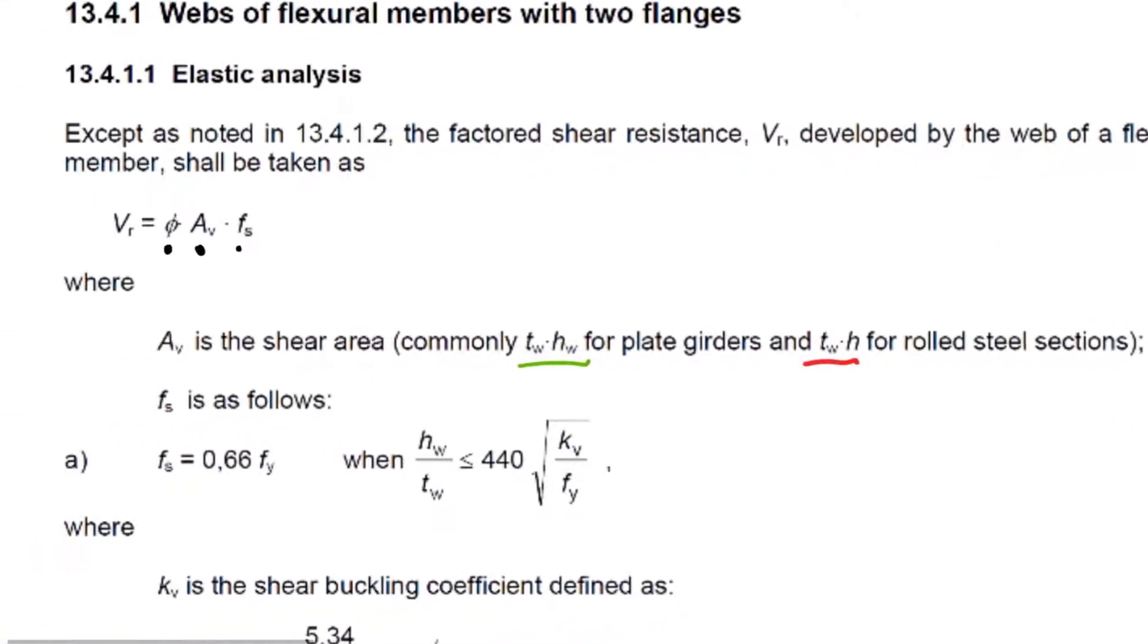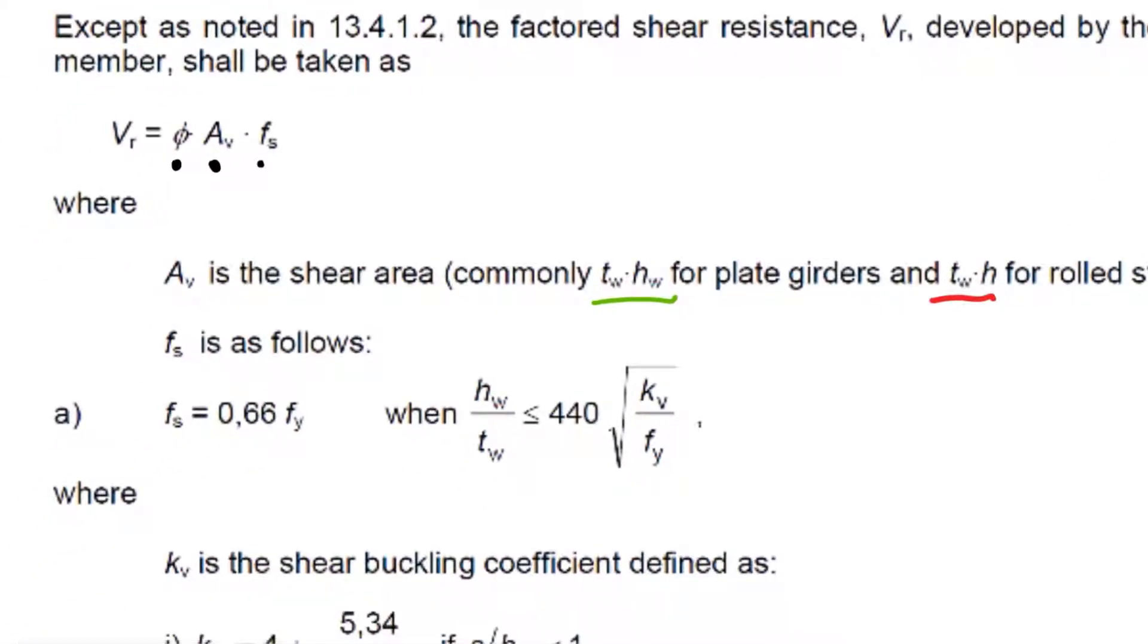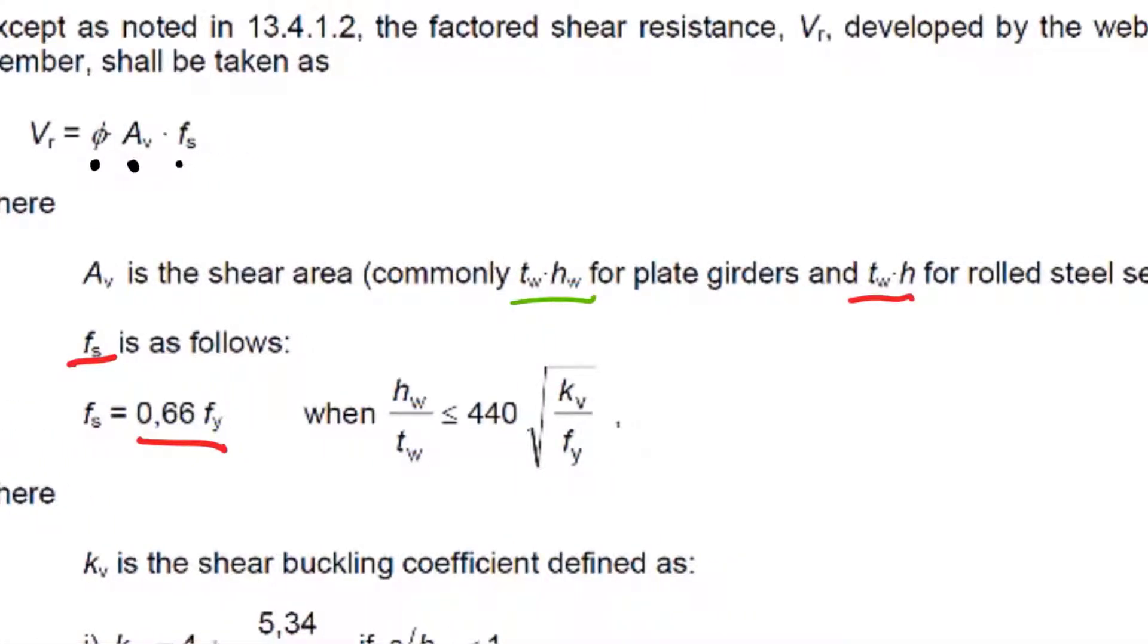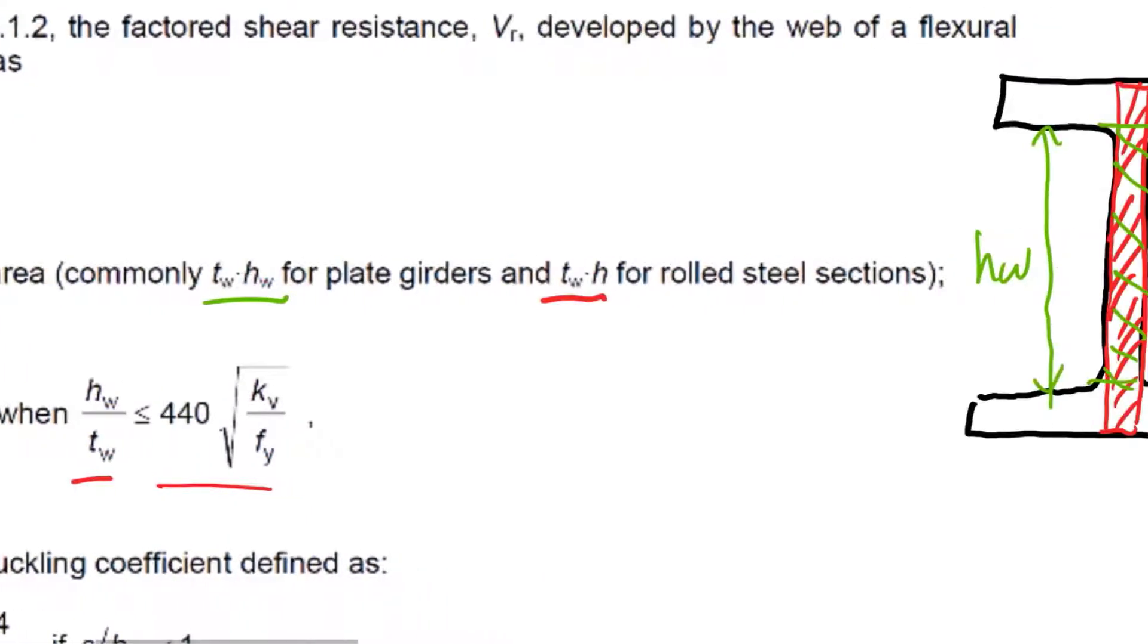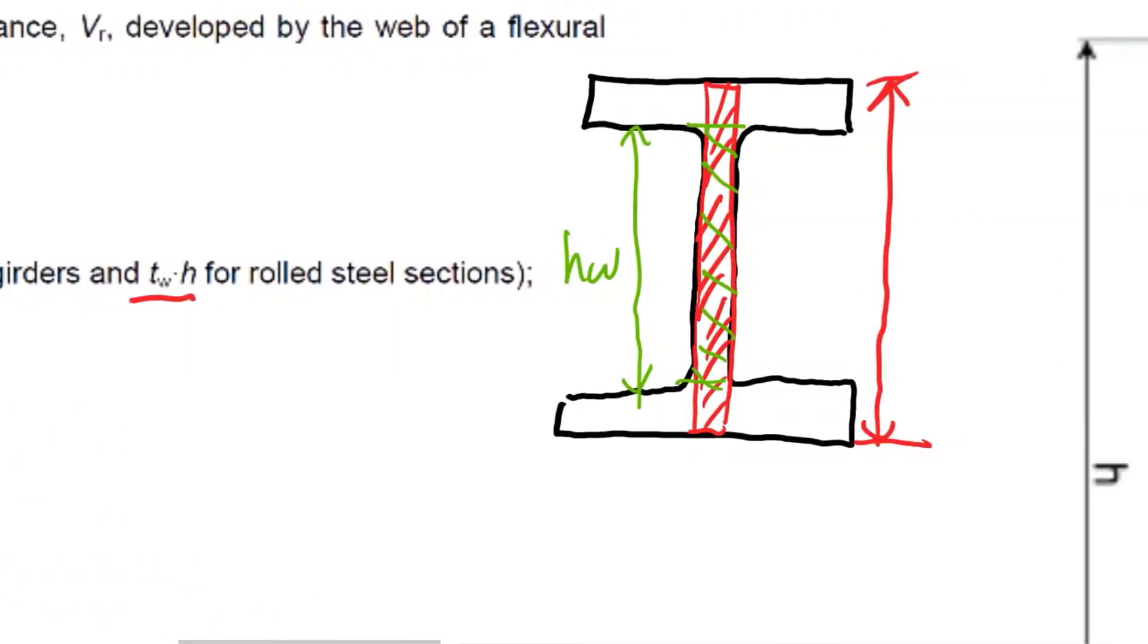The shear stress, the ultimate shear stress that you design for, is lower than your yield. You only use two-thirds because steel as a material is not as strong in shear as it is in tension, so we use 0.66 times yield. We can use this equation when HW over TW is less than a certain criteria, and this check is trying to make sure that we don't have web buckling.